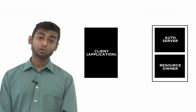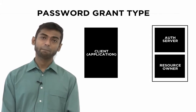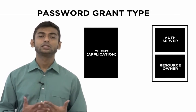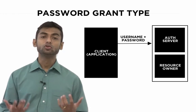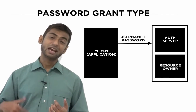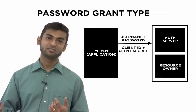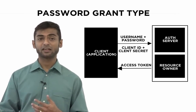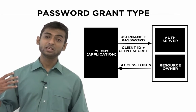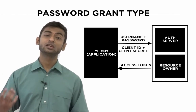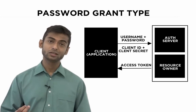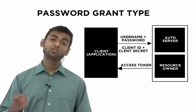The next grant type is the password grant type. In this grant type, the application needs to include the username and password of the end user in addition to the client ID and client secret in order to get an access token. Because it immediately has access to the end user's username and password, the password grant type is typically used by trusted applications.